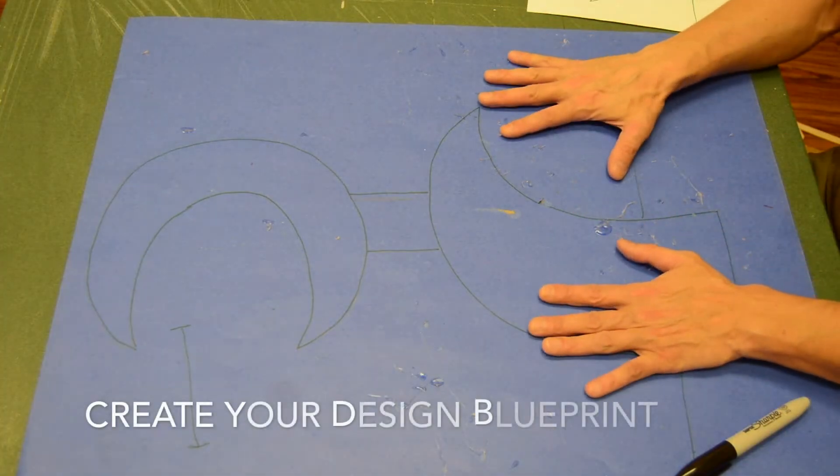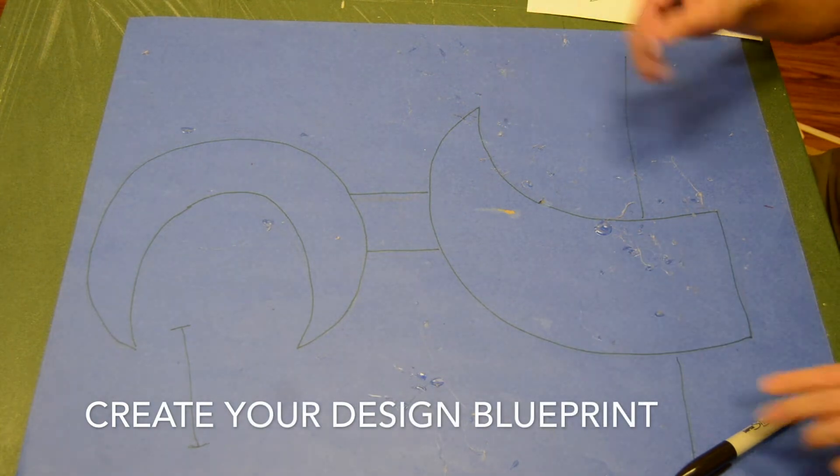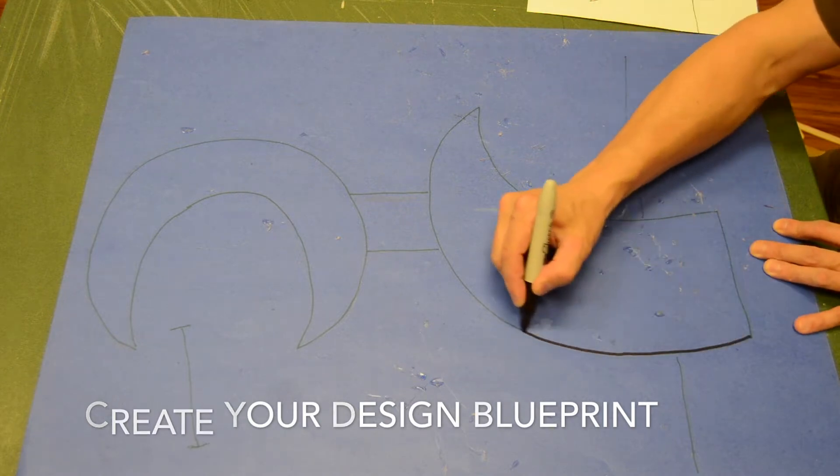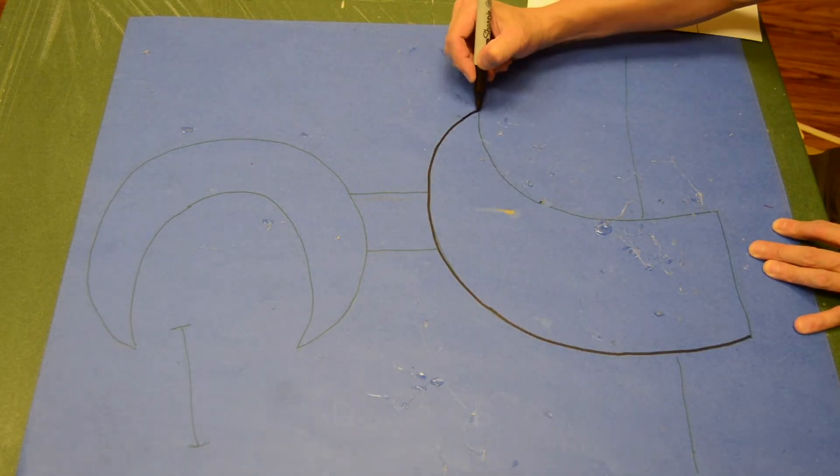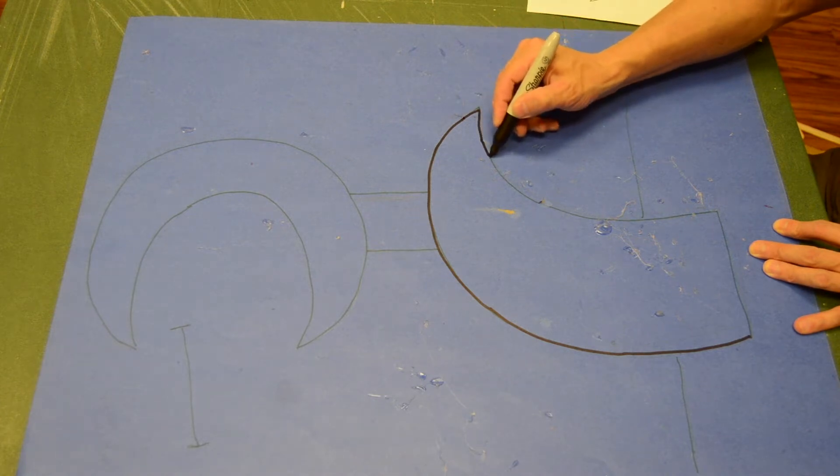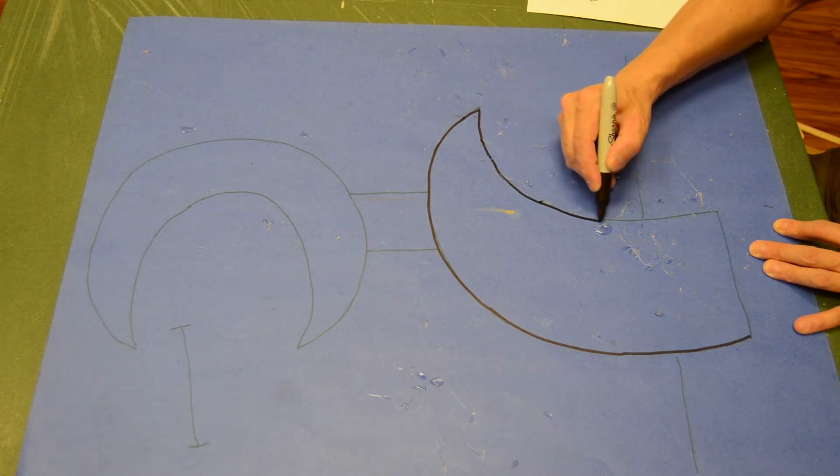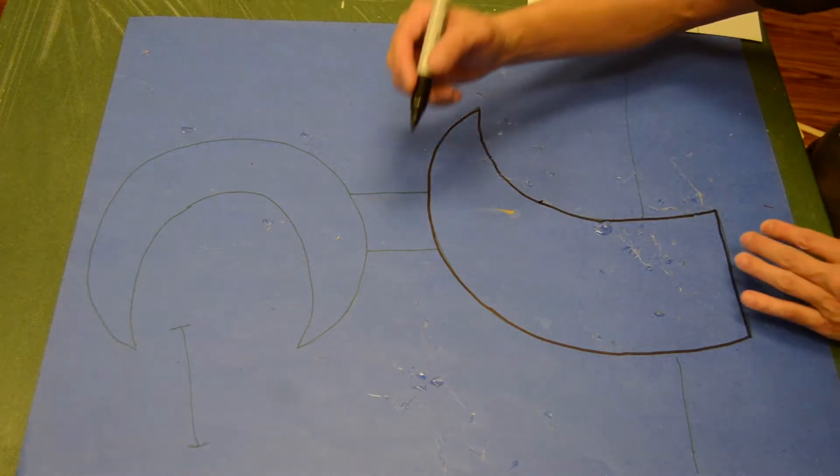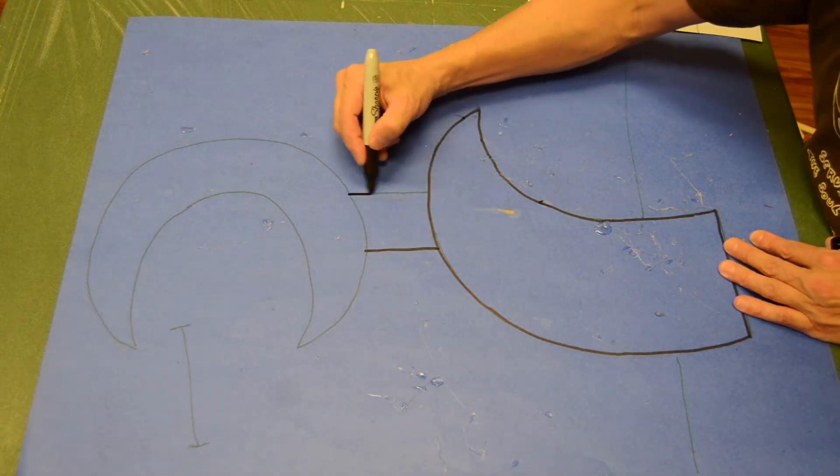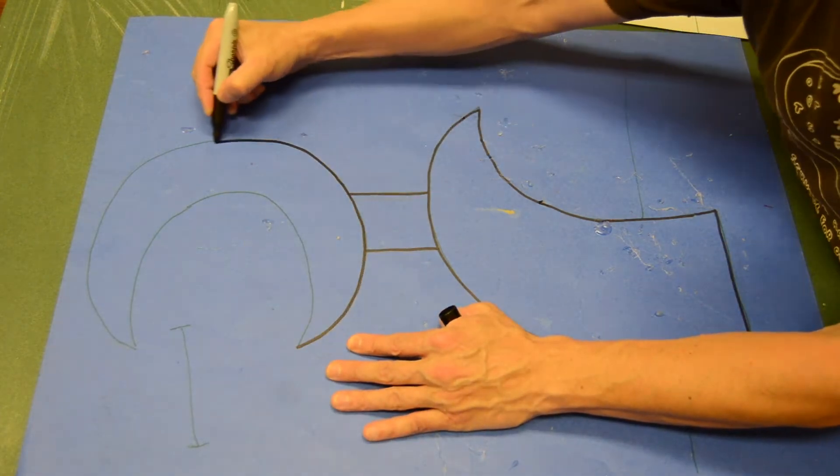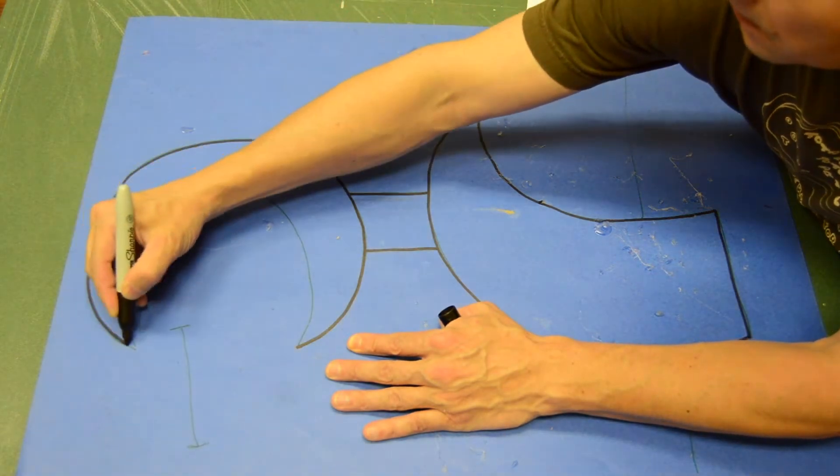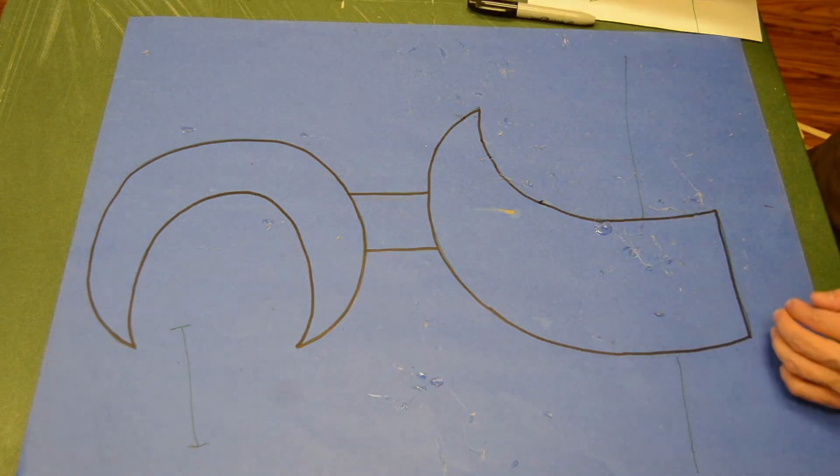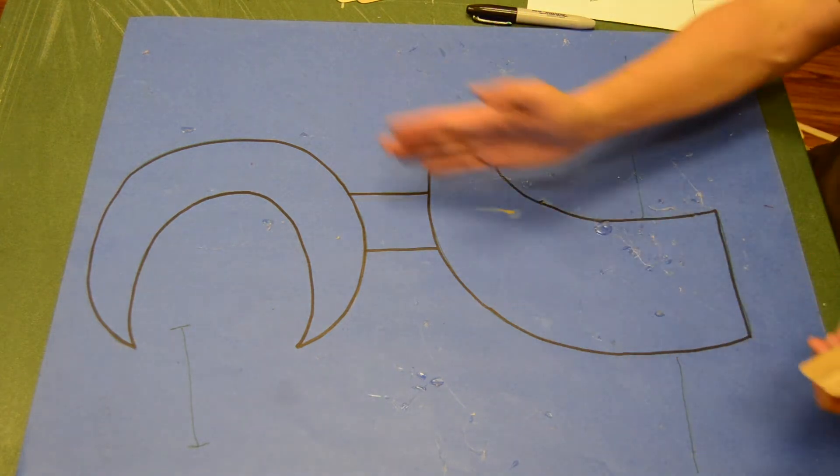So I have a piece of tag board here. It's a little bit larger and I'm going to draw out that shape again. And this is going to be really key to help me make something that works. There it is. And this is the exact shape or the exact size that my sculpture is going to be. This is basically your blueprint.